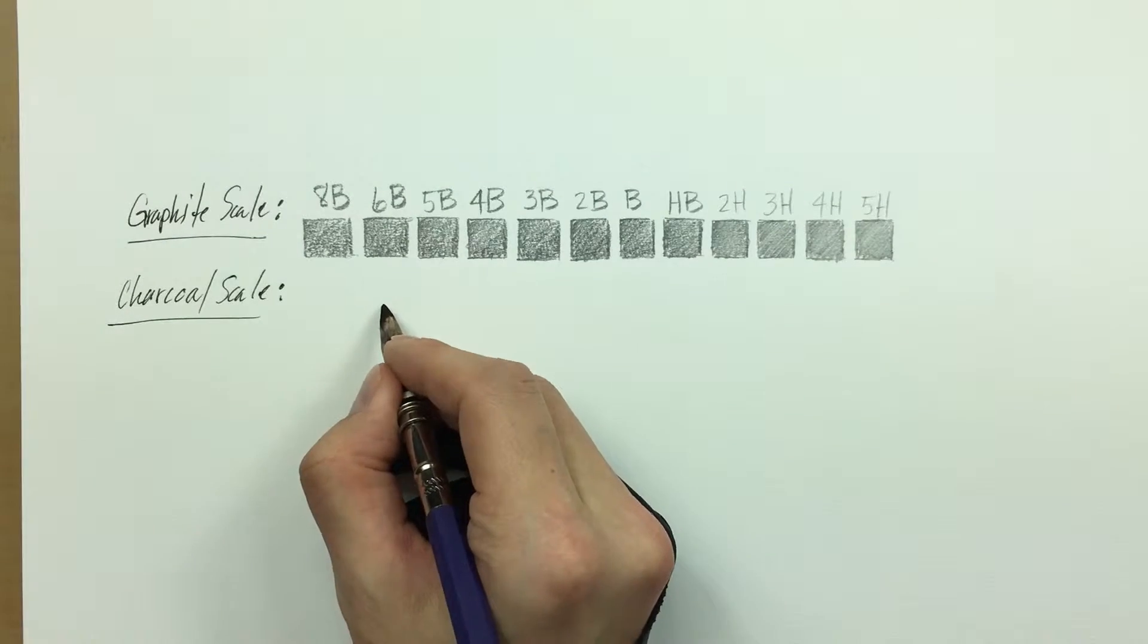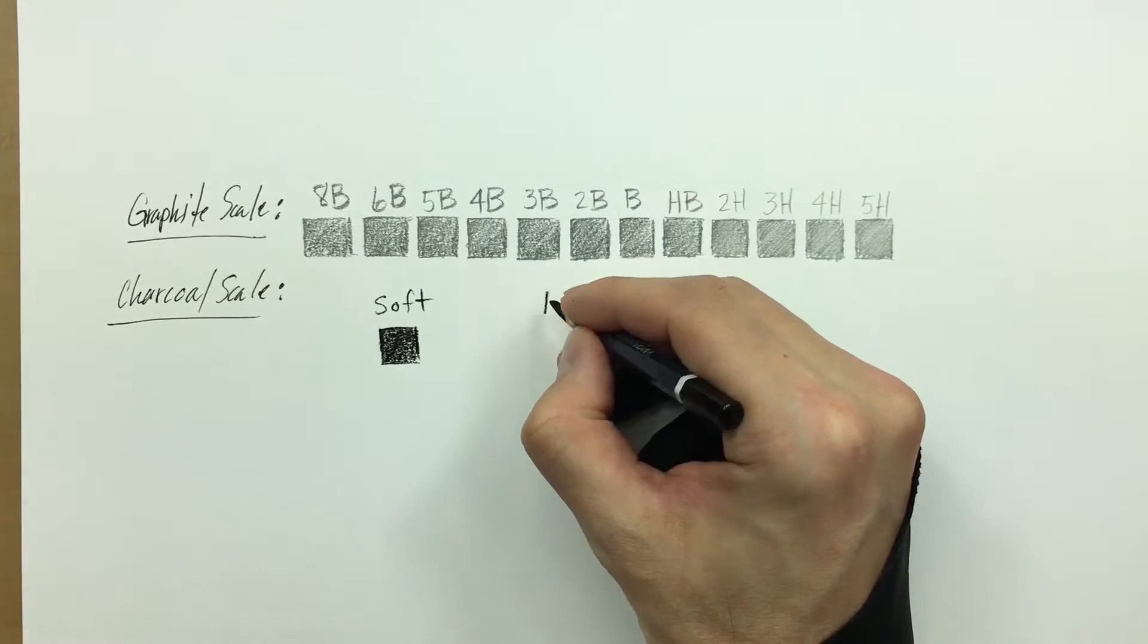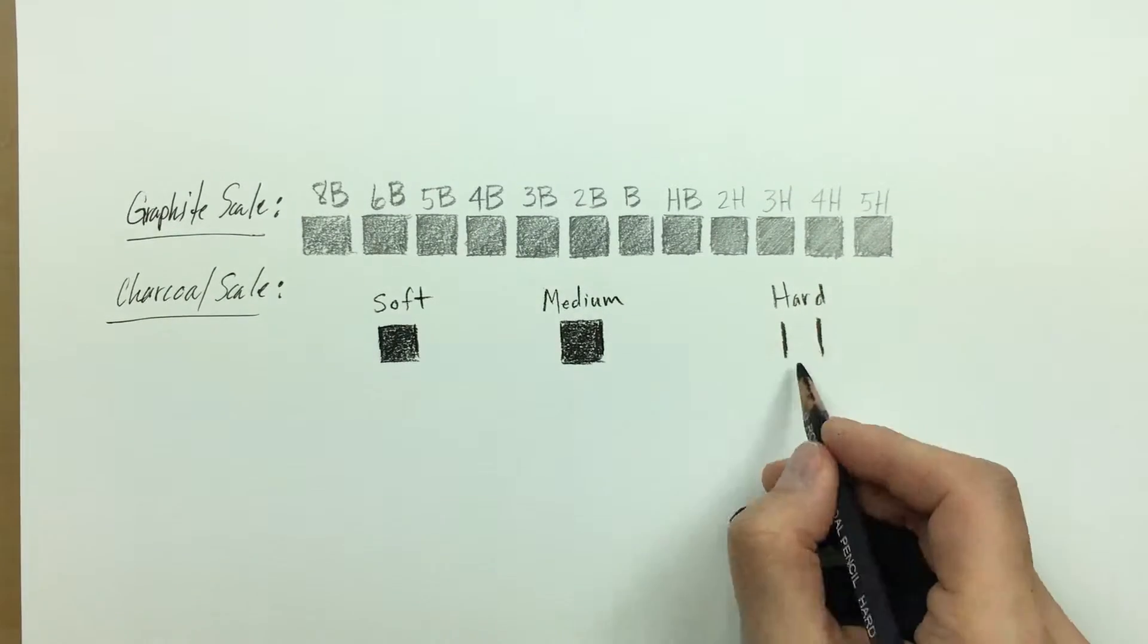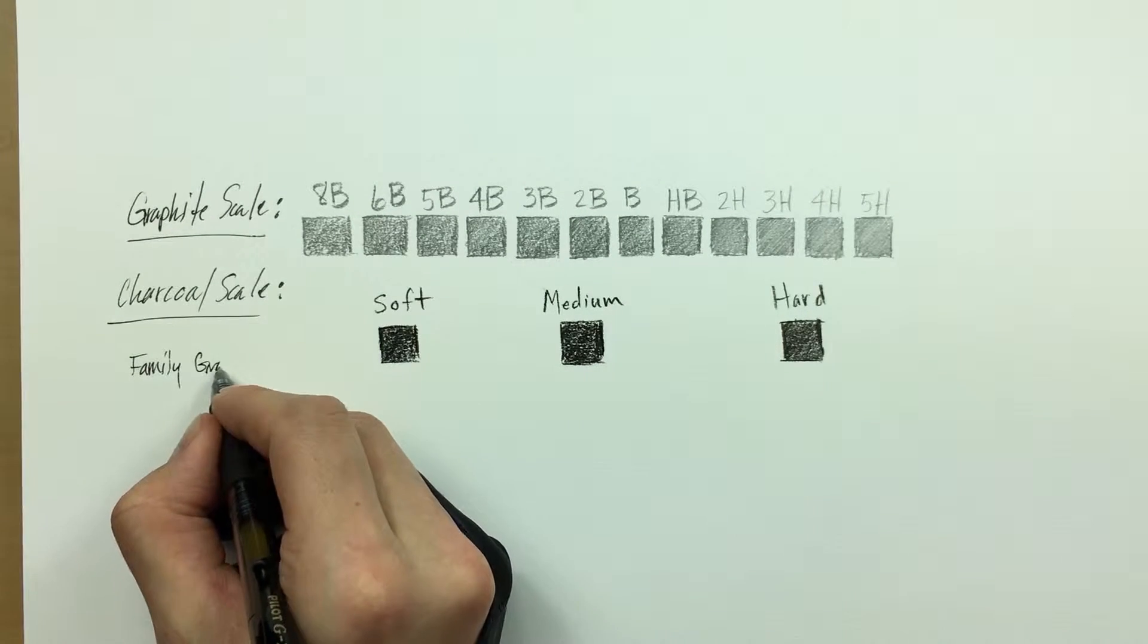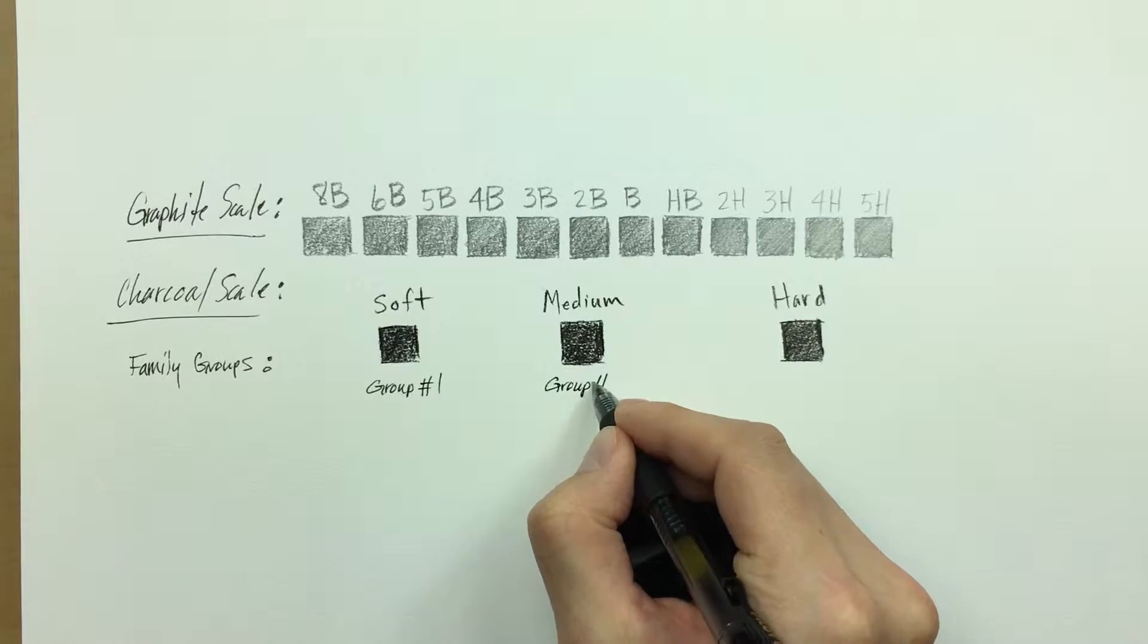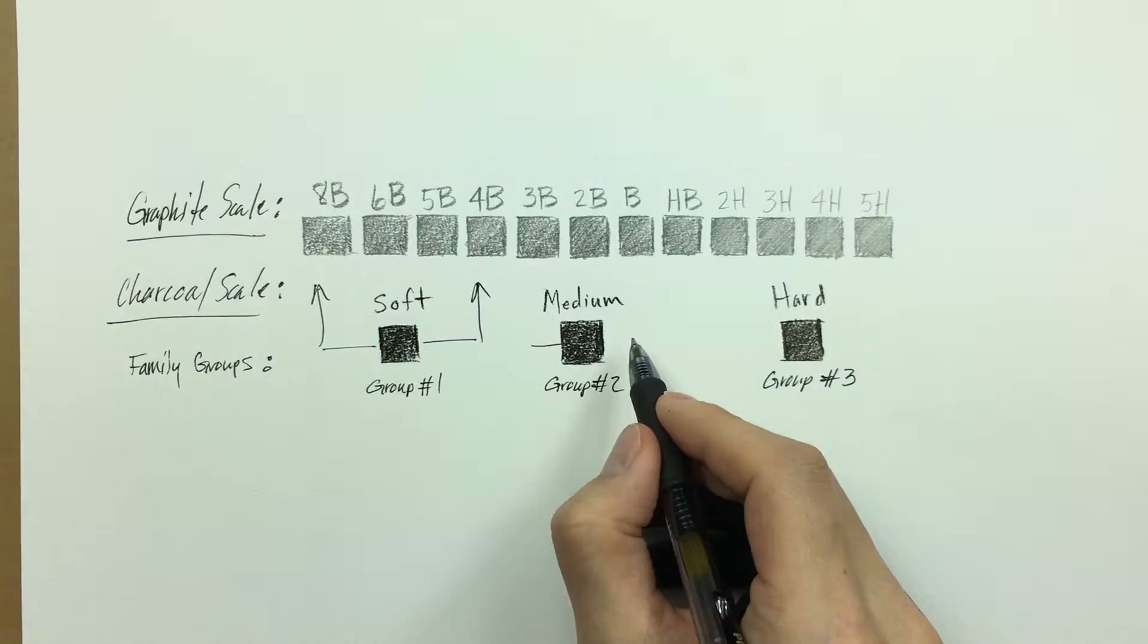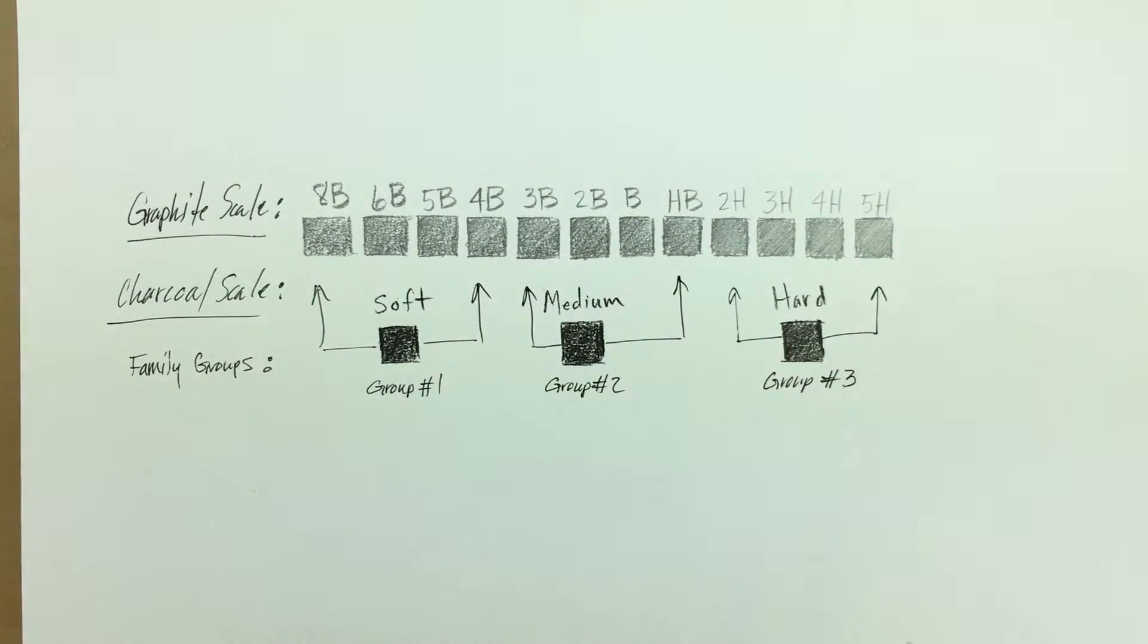Now when it comes to the charcoal scale, it's a little more simplistic. There's only soft, medium and hard rated charcoals that I use. Of course the only thing that changes is the amount of binder that's infused into each of these three different grades of charcoal. Because of that I have broken down these three charcoals into what I like to call their family groups: soft being group number one, medium being group number two and hard being group number three. Now the soft charcoal goes best with graphites 8B through 4B, medium charcoal goes best with graphites 3B through HB, and hard charcoal goes best with 2H through 5H graphite.